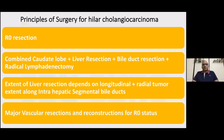The principles of surgery when taking up these patients: one has to look for R0 resection. But in our own series as well as worldwide literature, at least around 10 to 15% of patients have R1 disease in the specimen. Combined caudate lobe plus liver resection, bile duct resection, and radical lymphadenectomy — that's the essence of the surgery. The extent of resection depends upon the longitudinal and the radial spread of the tumor along the intrahepatic segmental bile ducts.